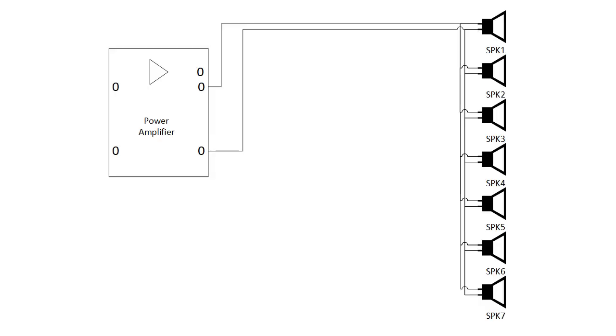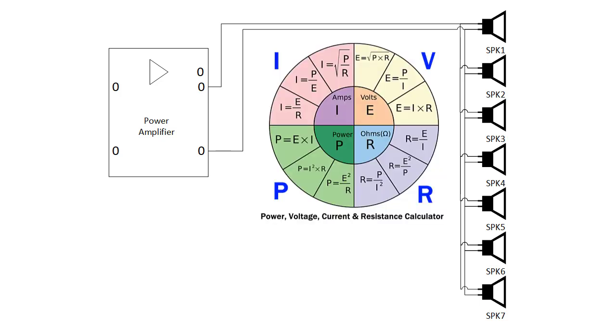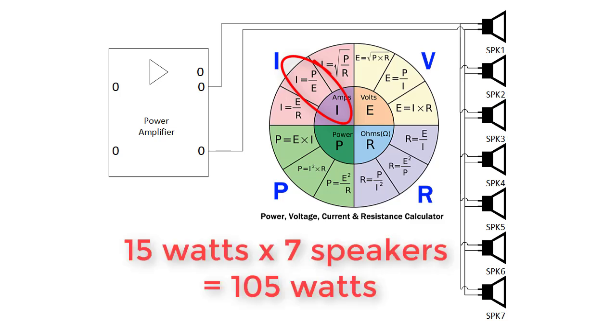Let's say we're putting together a 70 volt distributed sound system with 7 speakers that are each tapped at 15 watts, and it has a 120 watt amplifier. We need to know what cable to use, so using our handy chart here, we have a voltage of 70.7 volts, and know that the total power of all 7 speakers is 15 watts times 7, or about 105 watts.